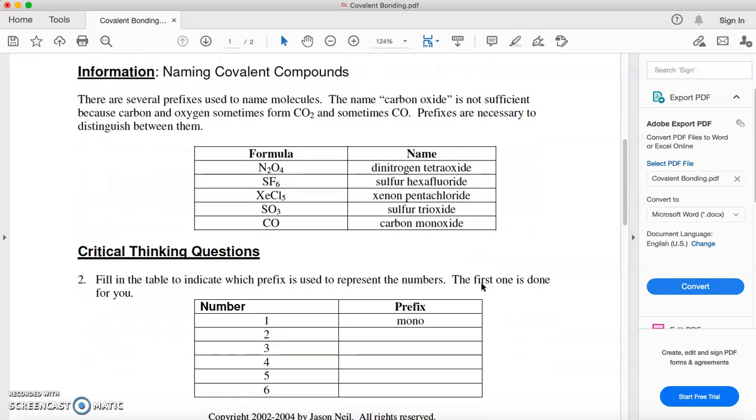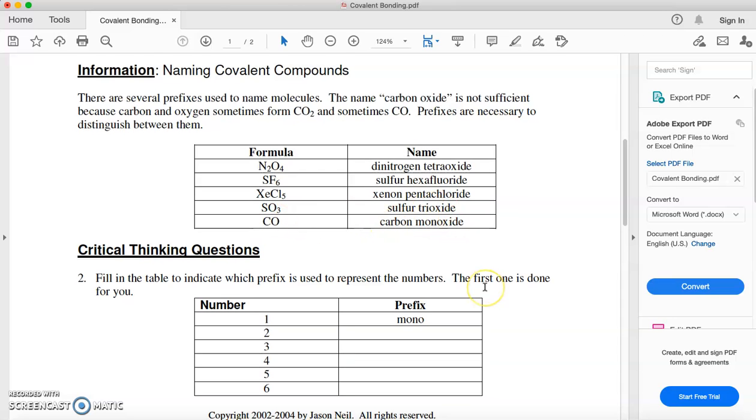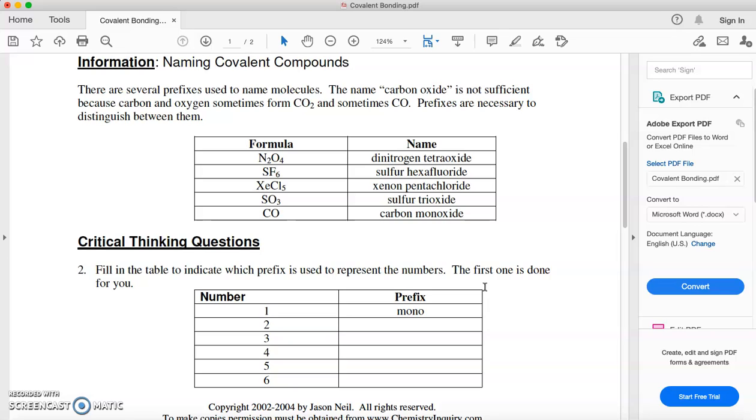So now, when we name covalent compounds, and again these are all just non-metals, there are several prefixes that we use. So let's say we have carbon and oxygen. We don't just call it carbon oxide, because sometimes we could have two oxygens, and sometimes we could have a single oxygen. So we use prefixes to name covalent compounds. For example, N2O4: dinitrogen tetraoxide. SF6: sulfur hexafluoride. XeCl5: xenon pentachloride. SO3: sulfur trioxide. CO: carbon monoxide. So that's the names that we use for those different things.